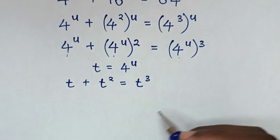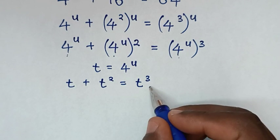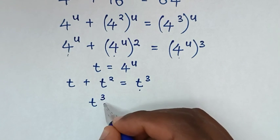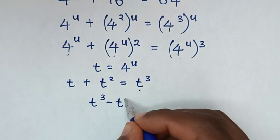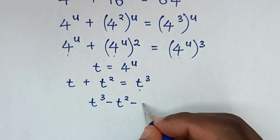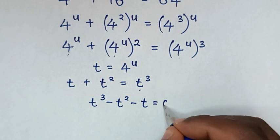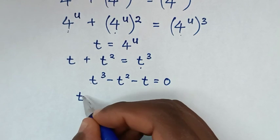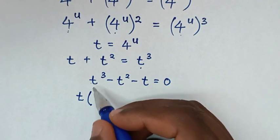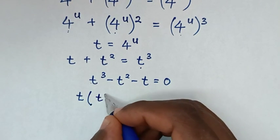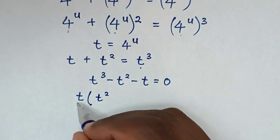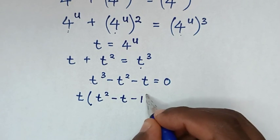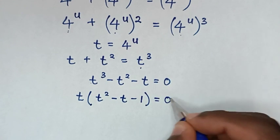In the next step, we move t squared and t to the right side. So it will be t cubed minus t squared minus t equals 0. From here, t is common, so we take t out of the bracket: t squared minus t minus 1, bracket equals 0.